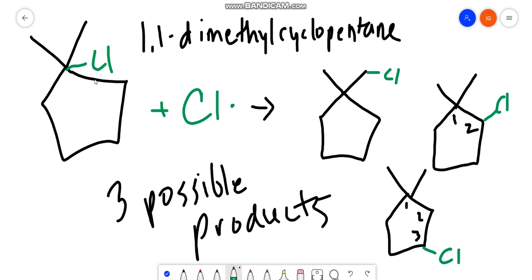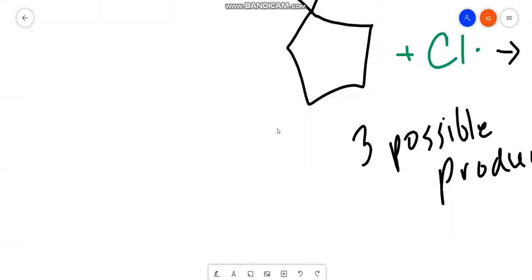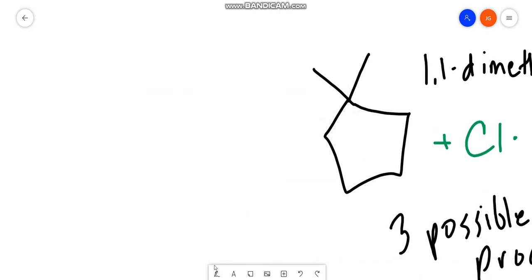For one, this would violate the octet rule. But now someone might say, if you're very careful with drawing out these structures, actually, let's go up here. Let's zoom into this carbon up here.